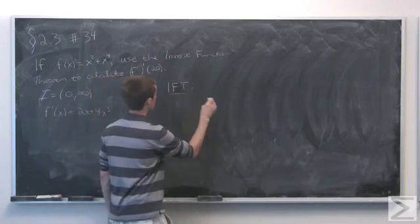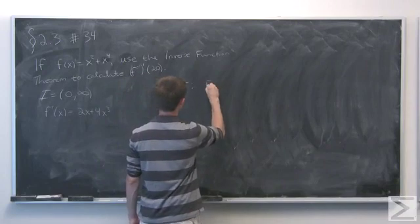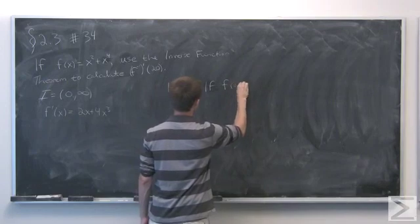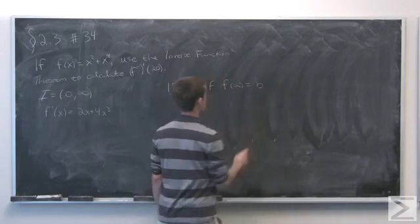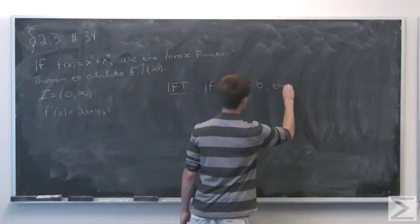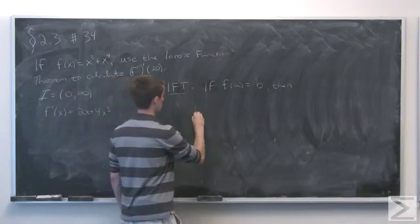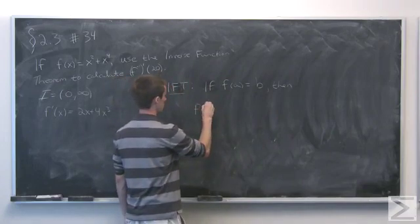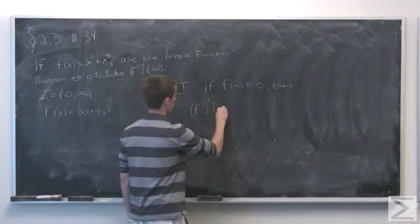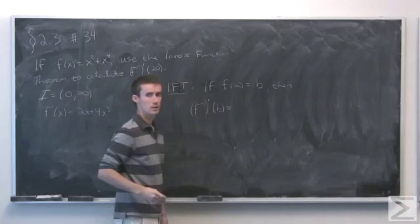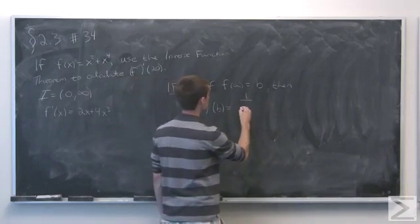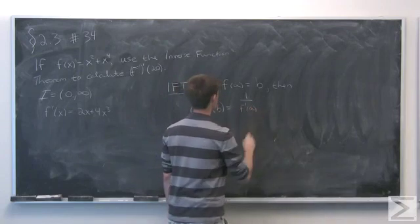IFT for inverse function theorem says that if f(a) is equal to b, then f inverse, the derivative of f inverse evaluated at the point b, is going to be just the reciprocal of the derivative of f evaluated at a, meaning 1 over f'(a).